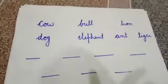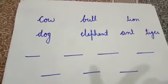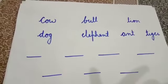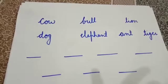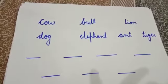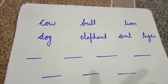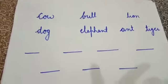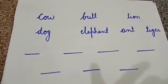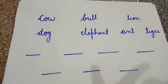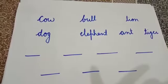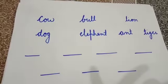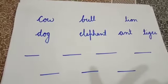Students, now look at this list of words. These words are cow, bull, lion, dog, elephant, ant, and tiger.